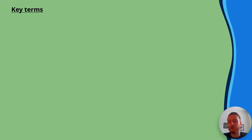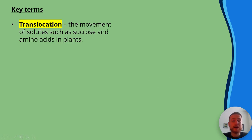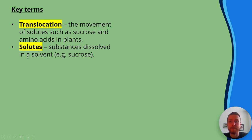Some key terms first of all. Number one, translocation is the movement of solutes such as sucrose and amino acids in plants.